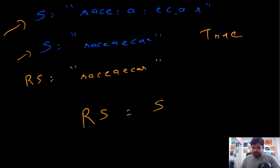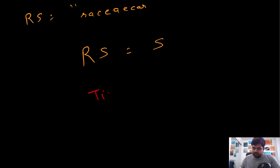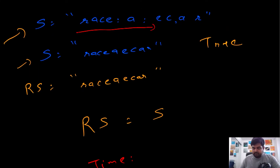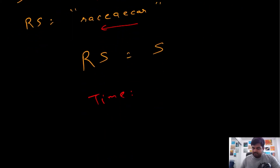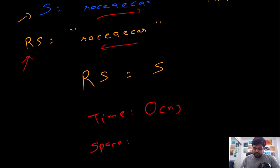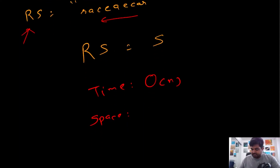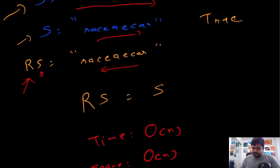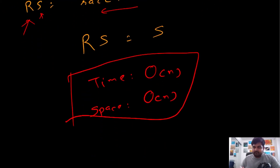This solution works as expected — no issues with that. For time complexity: we iterate over the string to remove non-alphanumeric characters, then again to create a reverse string, essentially iterating two to three times — so it's O(n), or more precisely O(2n). For space complexity, because we are creating a new reversed string, we are also consuming additional space, making space complexity O(n) where n is the number of characters in the string. This approach is justified and works, but can we do better in time and space complexity? Yes, there is a better approach.